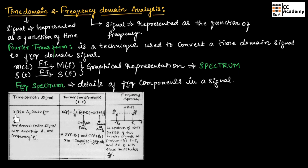Let us consider an example of a sinusoidal signal represented as X of T equals A naught cos(2π F naught T). This is a general cosine signal with amplitude A naught and frequency F naught. If we perform Fourier transform on this signal, we obtain X of F equal to (A naught / 2) [δ(F − F naught) + δ(F + F naught)], where δ(F − F naught) is the impulse function at frequency F = F naught, and δ(F + F naught) is the impulse function at F = −F naught.